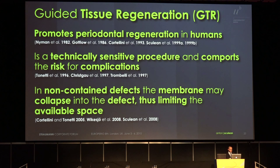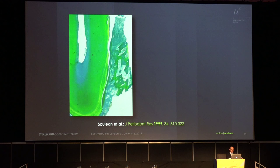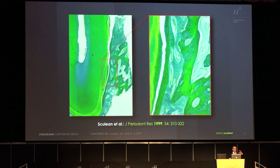What about guided tissue regeneration with different types of membranes? We have evidence that guided tissue regeneration promotes periodontal regeneration in humans. However, technically this is a sensitive procedure because we can have a risk for complications. Another problem is that in non-contained defects, the membrane may collapse into the defect, and we then have limited space for the regeneration process. In this example from one of our studies, you can observe newly formed cementum, periodontal ligament, and bone on the root surface — indicating that with the membrane alone, if GTR functions, we can have perfect regeneration — more than 4.5 millimeters histologically in this case.